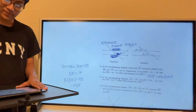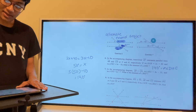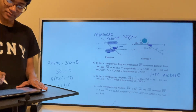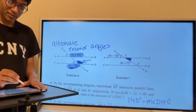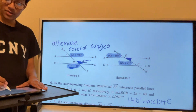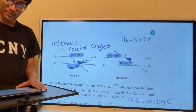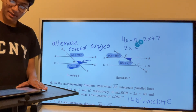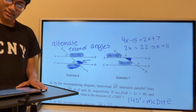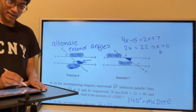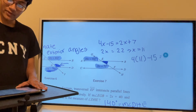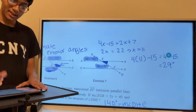Question 7: find the measure of angle BEF. The shaded angle is congruent to another angle, so I just need to find that one. The angles 4x - 15 and 2x + 7 are corresponding angles, so set them equal and solve: x = 11. Plugging back in: 4(11) - 15 = 44 - 15 = 29 degrees. That's the measure of angle BEF.